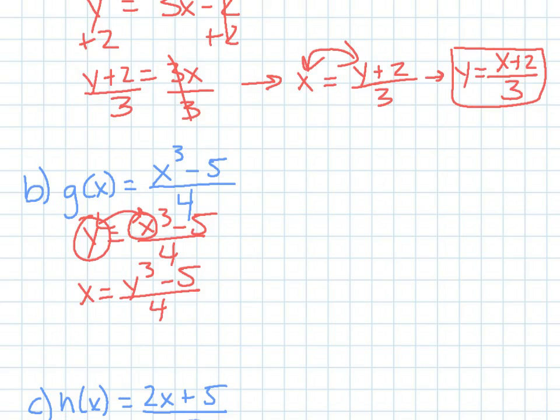And then from here, like I said earlier, I want to solve for y. So I would multiply both sides by 4. Let's get it out of the denominator. So I get 4x equals y cubed minus 5. And then from there, I'm going to add 5 to both sides.